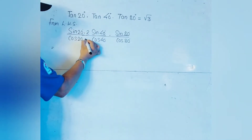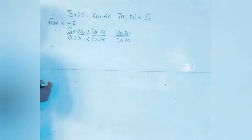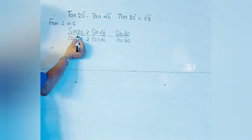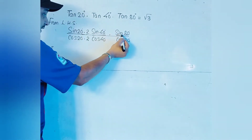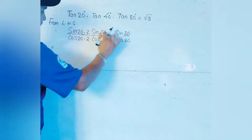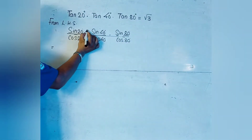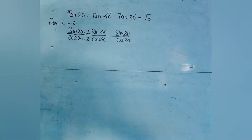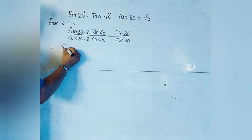We put them all together and multiply the numerator by 2 and also the denominator by 2. The purpose of multiplying numerator and denominator by 2 is to make it applicable for the use of the product-to-sum formula.